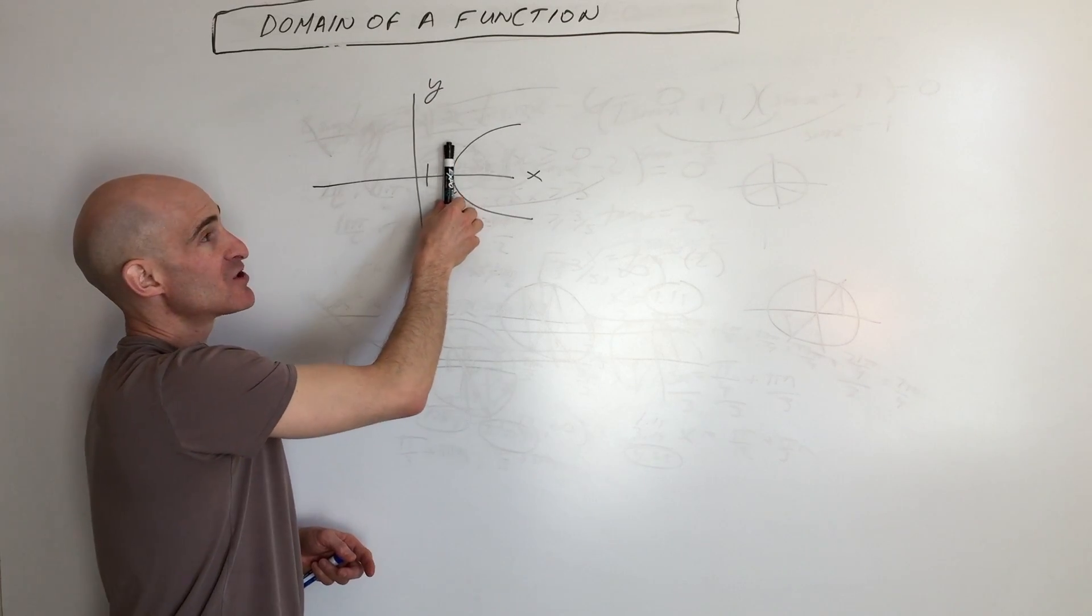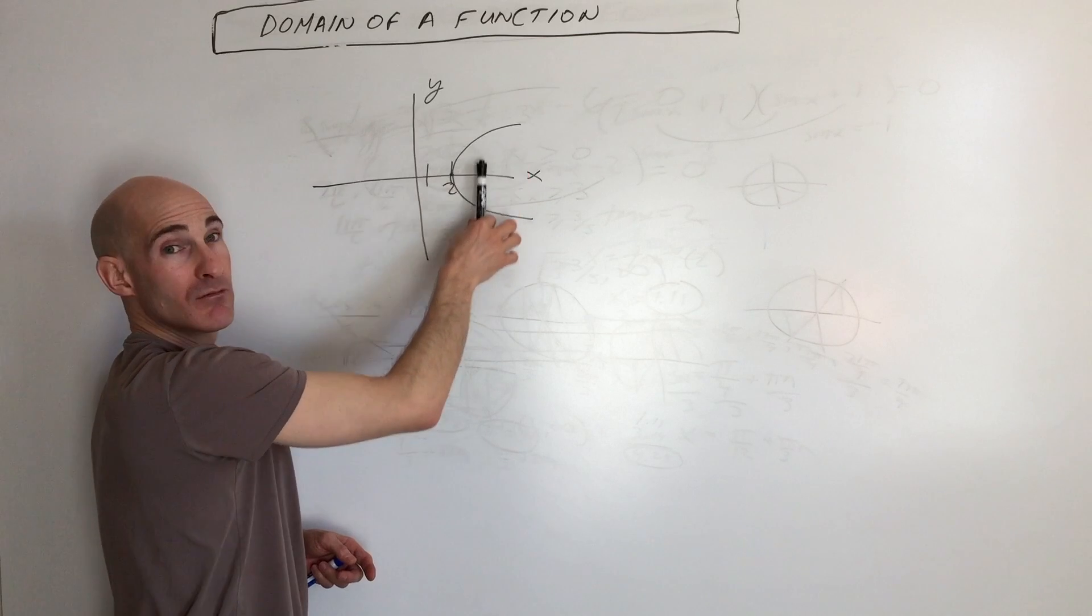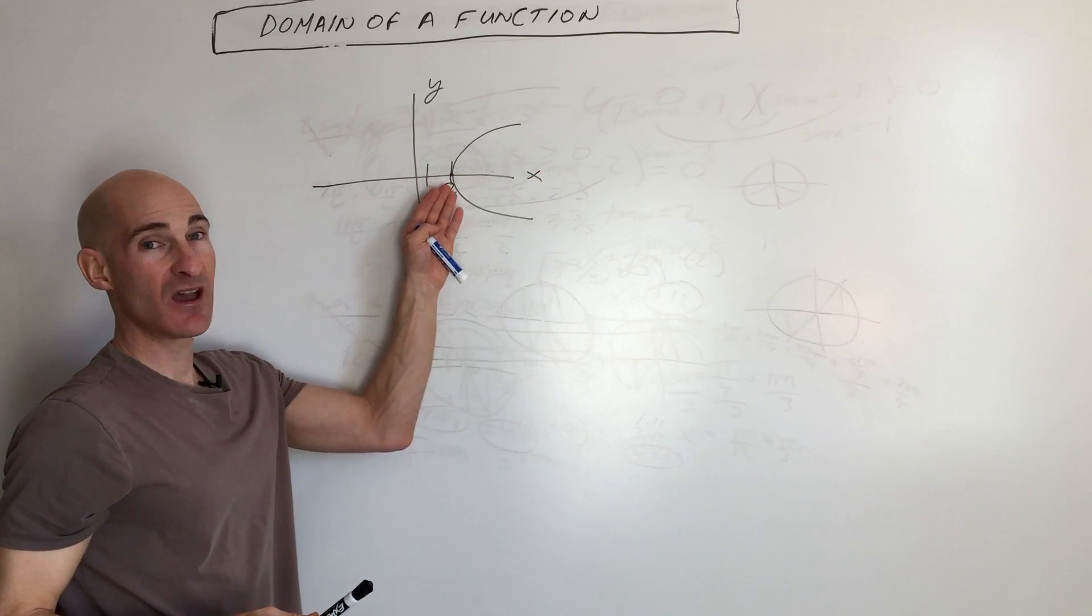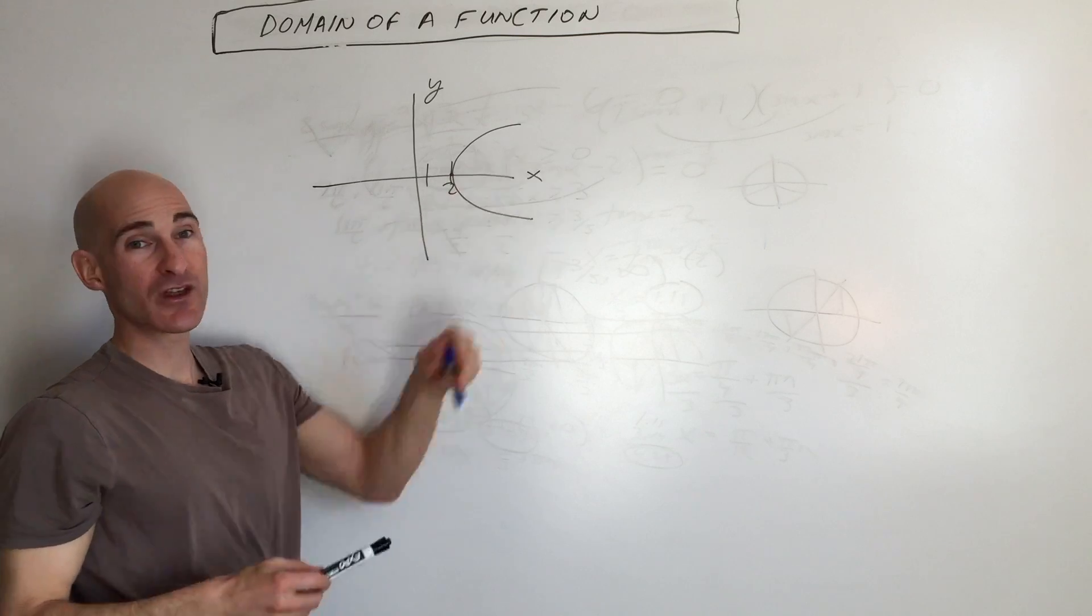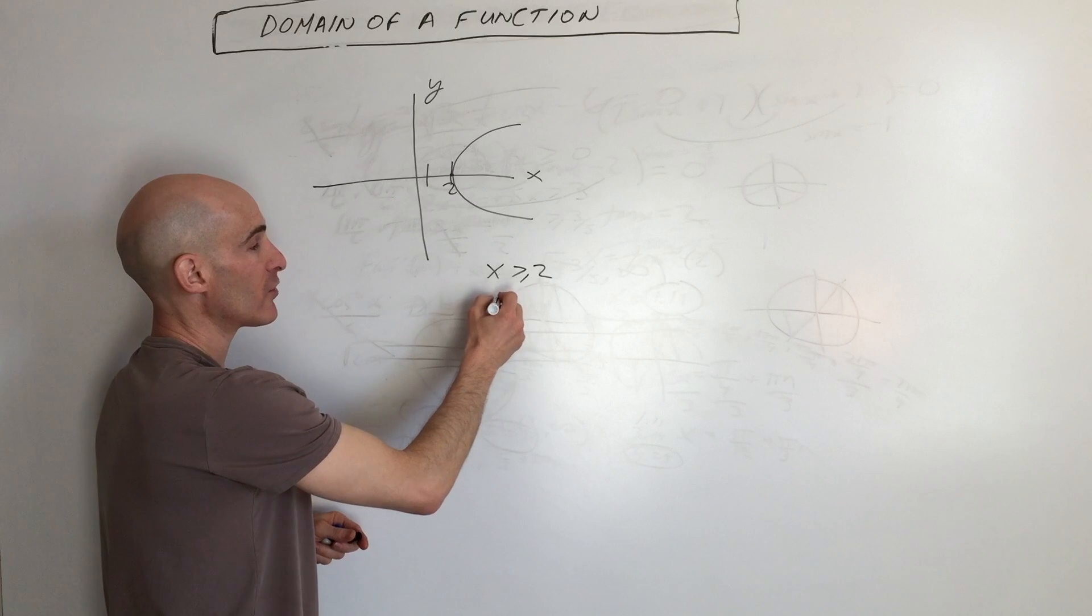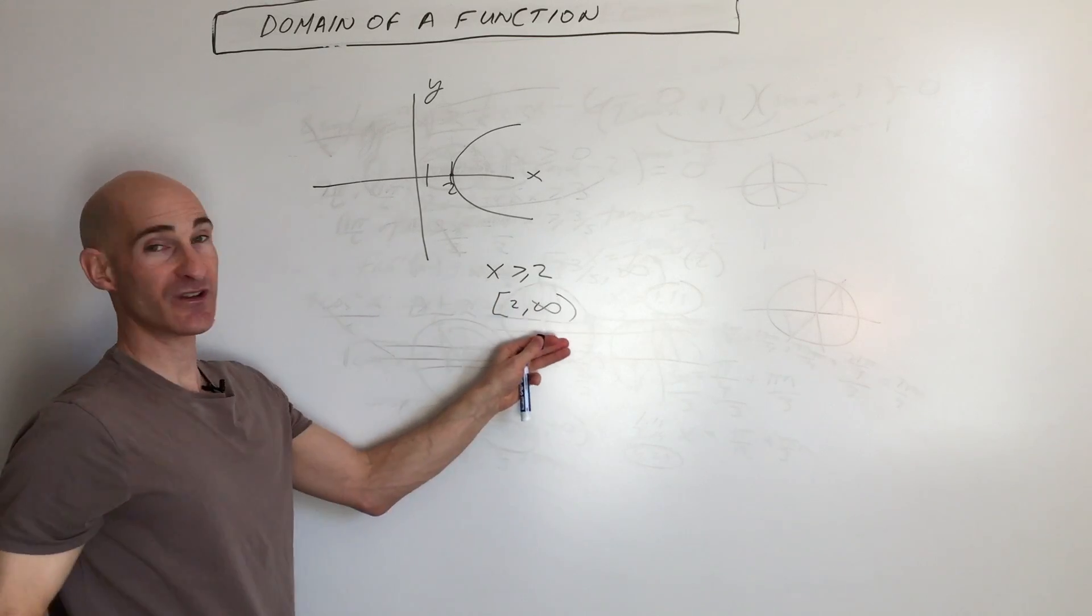Not until we get to two and beyond are there points on the graph, right? So that means that the domain has to be x is greater than or equal to two. So you could say x is greater than or equal to two, or if you are using the interval notation, from two to infinity.